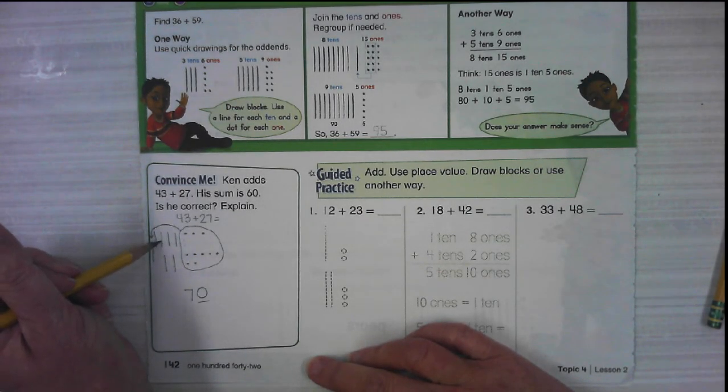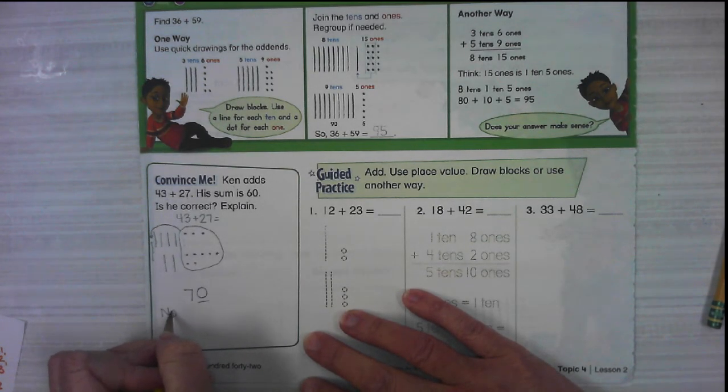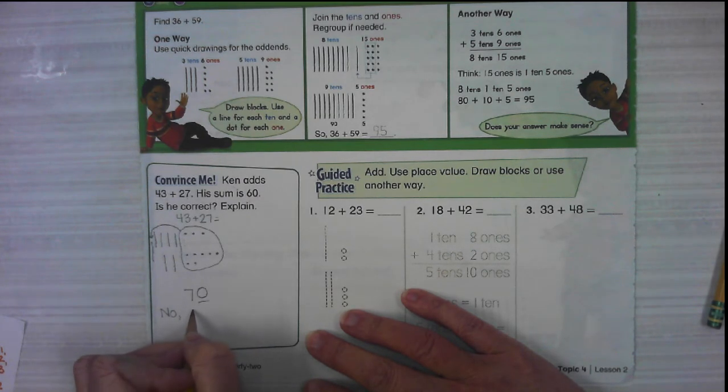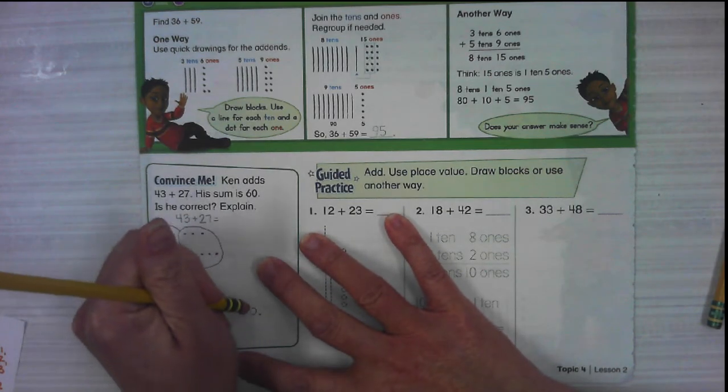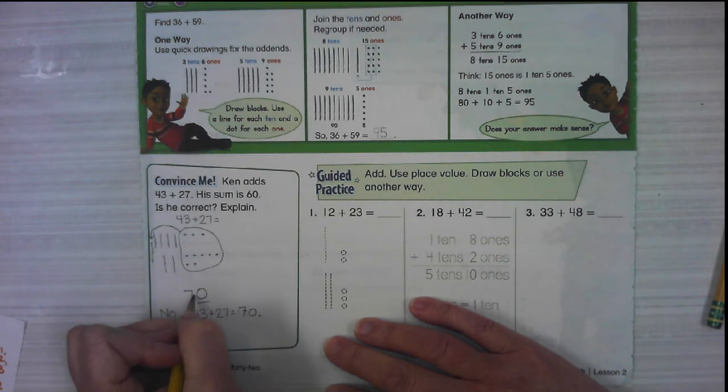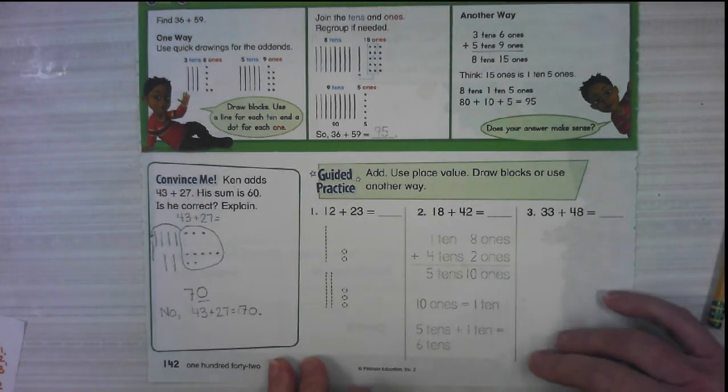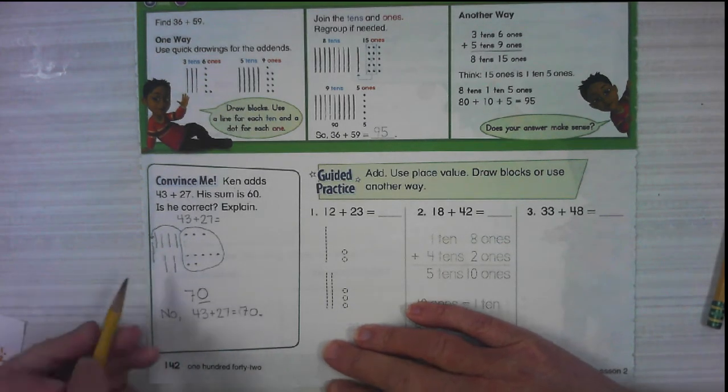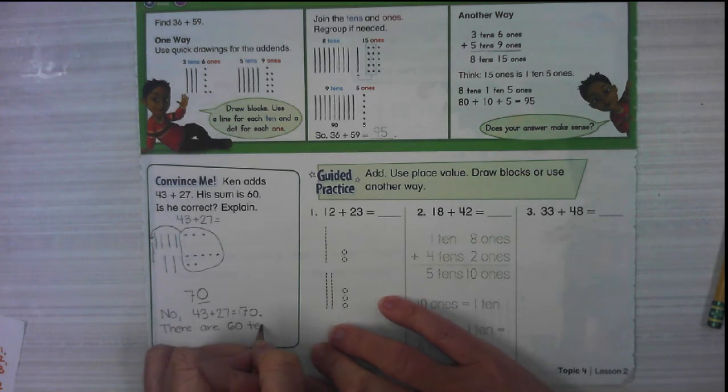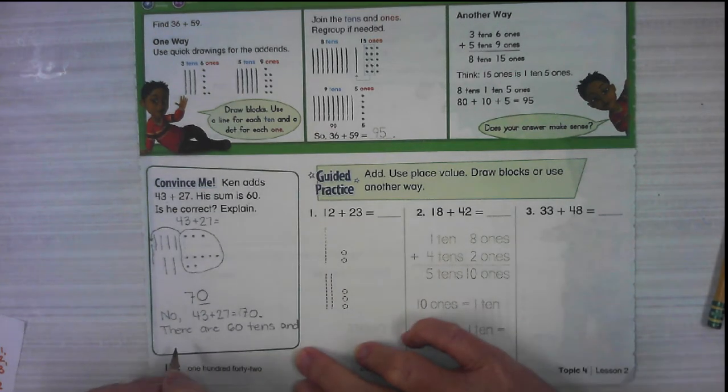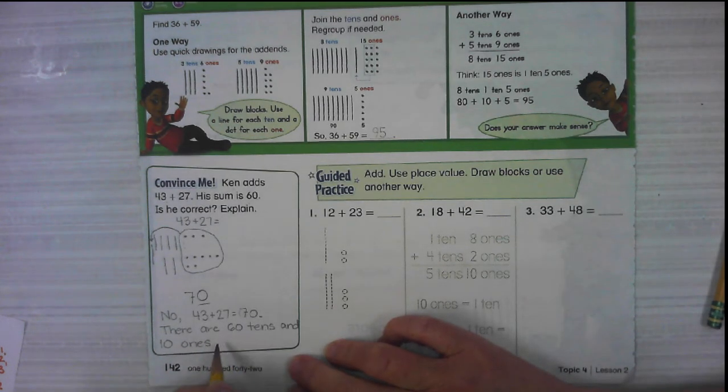Let's count that one more time because Ken got 60. We should have seven tens. One, two, three, four, five, six, seven. We have seven. So is Ken correct? No. 43 plus 27 equals 70. We can say there are six tens and 10 ones, which makes 70.